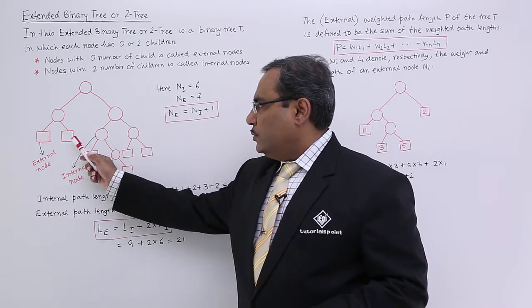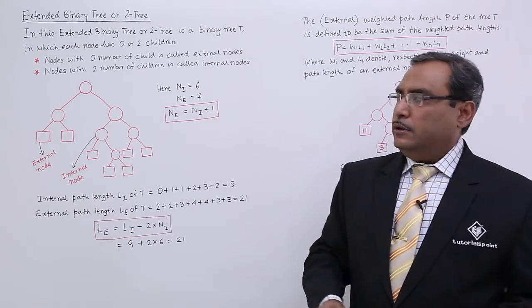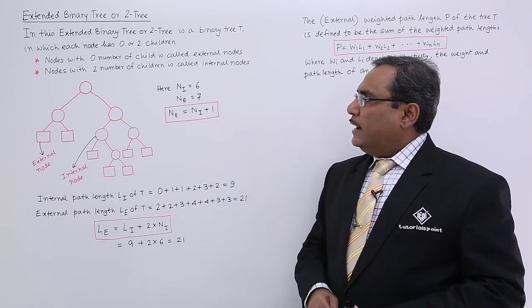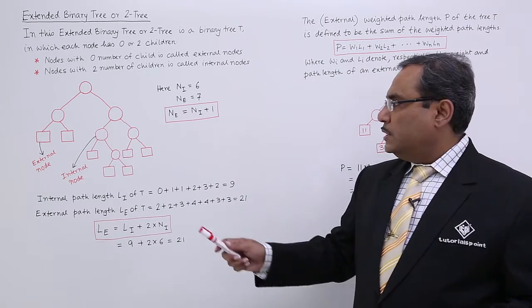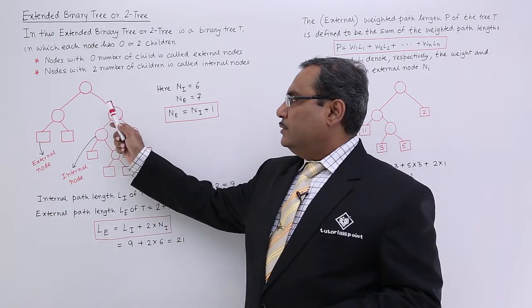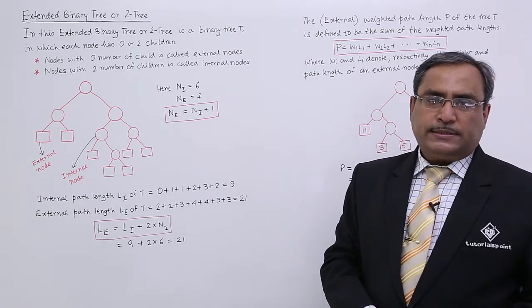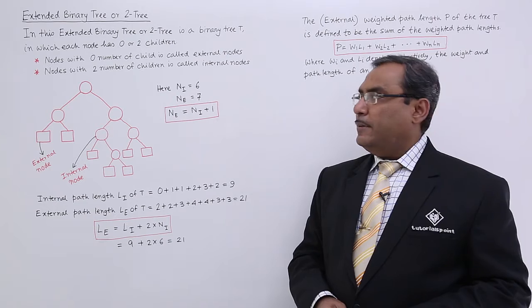So these are the external nodes, we have drawn them using rectangular boxes, and nodes with two number of children is called internal nodes and here we have drawn them using circles. So external nodes and internal nodes we are having.